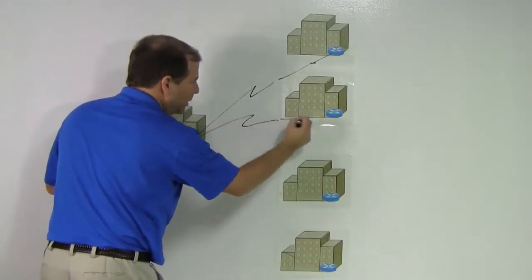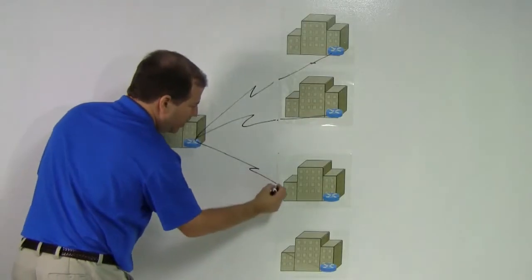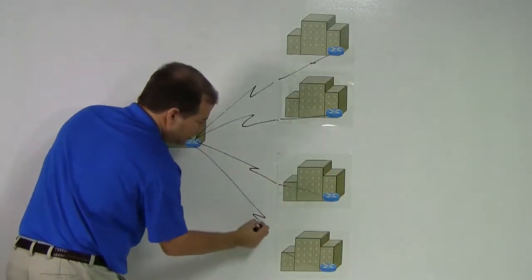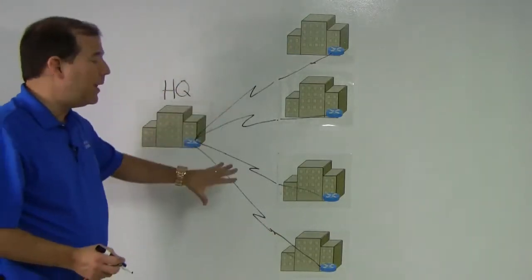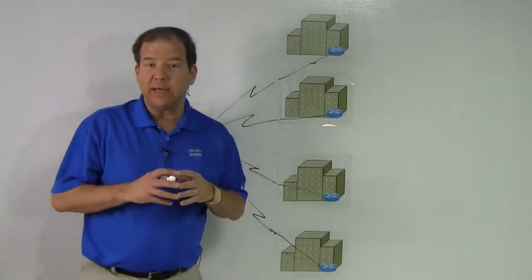So we have a direct link from HQ out to everyone else. Grand total, that's four links we're using to interconnect five sites.